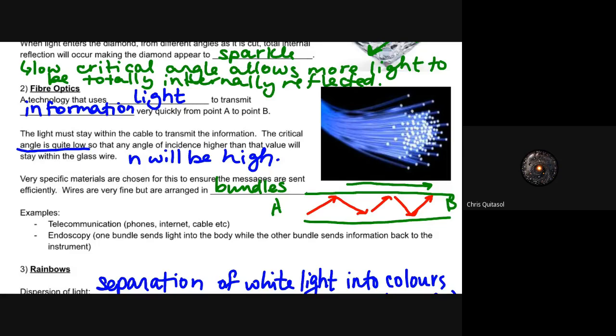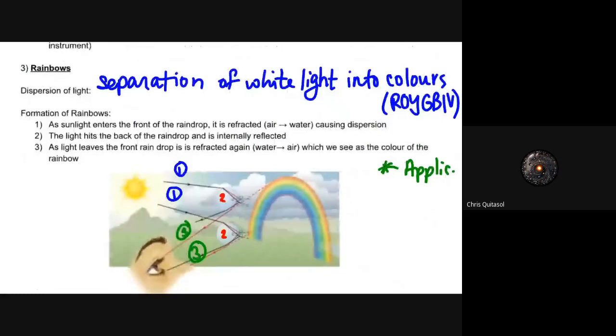One more aspect that we can look at is how rainbows work. The dispersion of light, or the separation of white light into colors, happens in rainbows. And it's as a result of those raindrops capturing sunlight, essentially. So sun enters the front of the raindrop. It is refracted from air into water, causing dispersion. The light hits the back of the raindrop, and is then internally reflected.